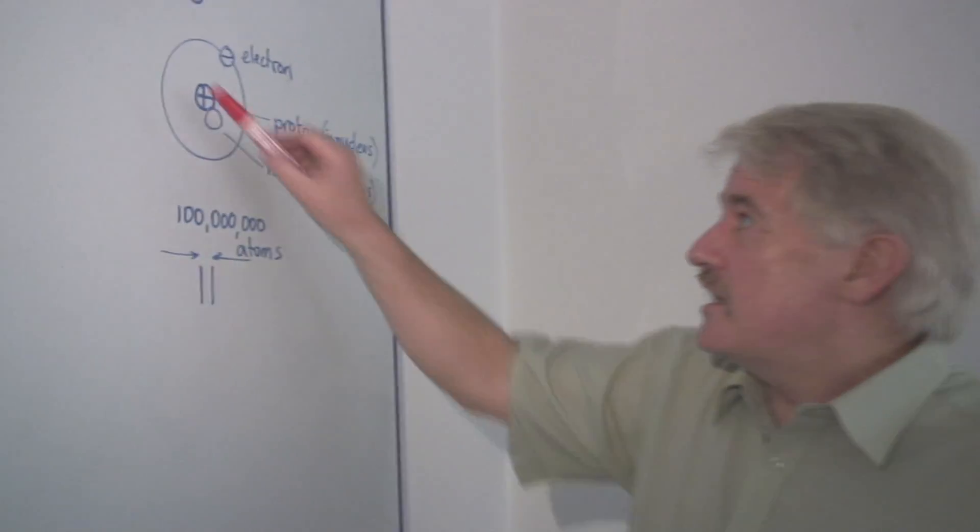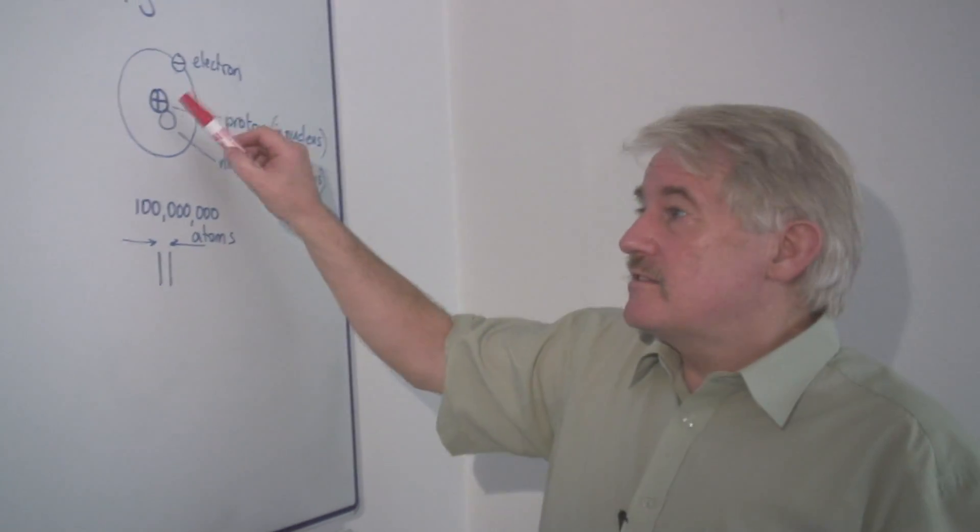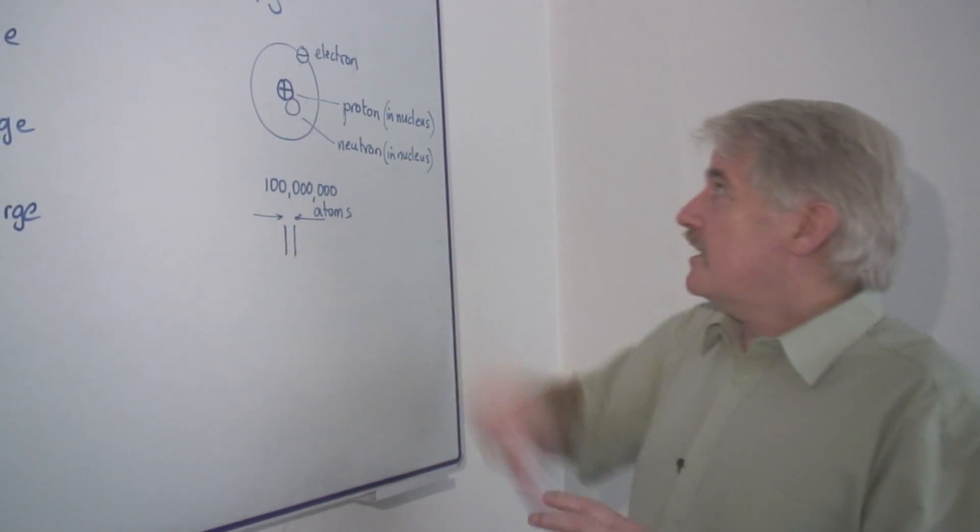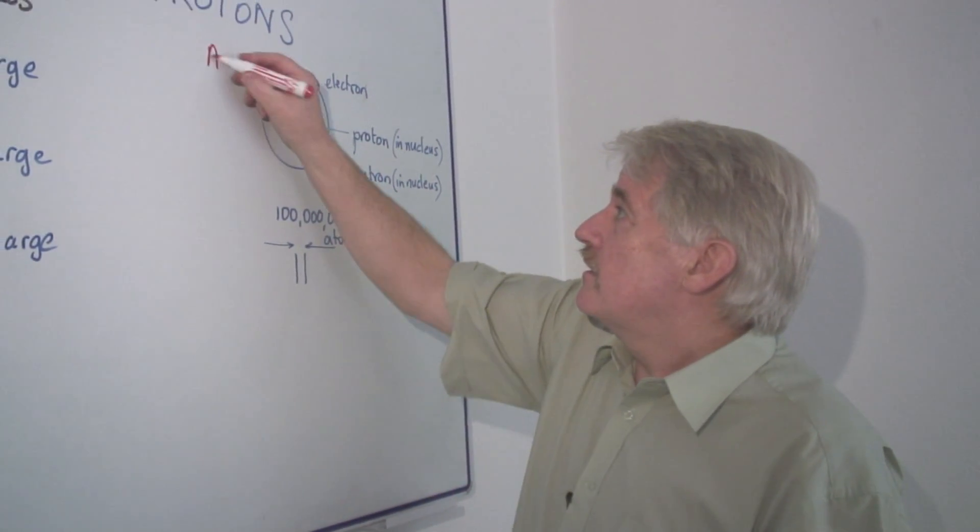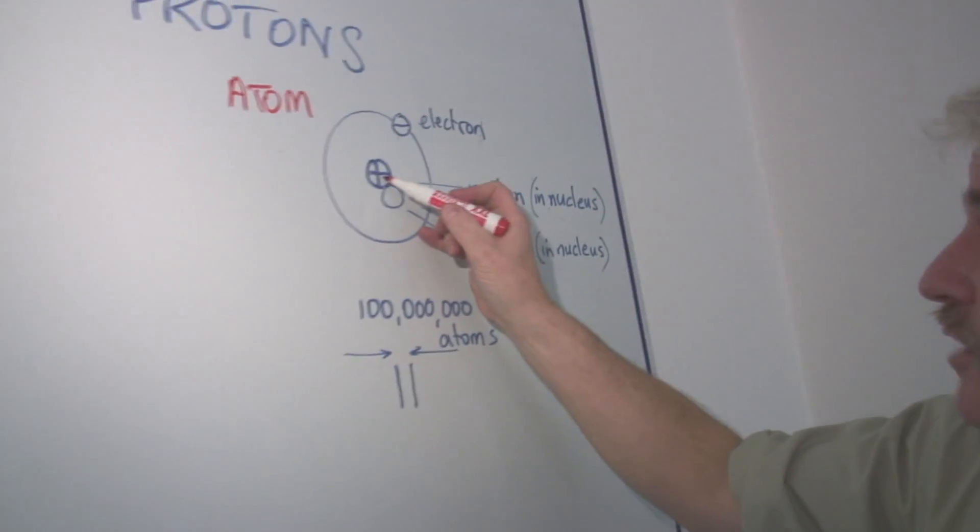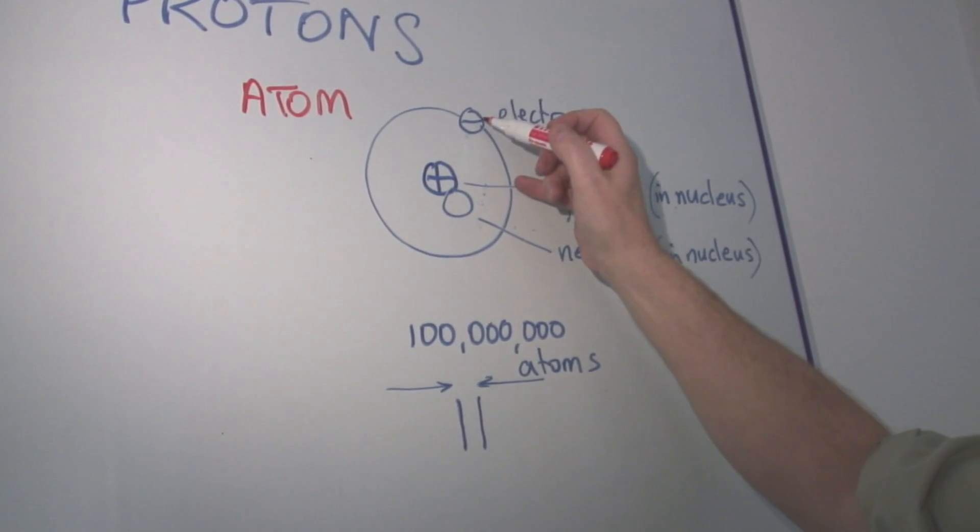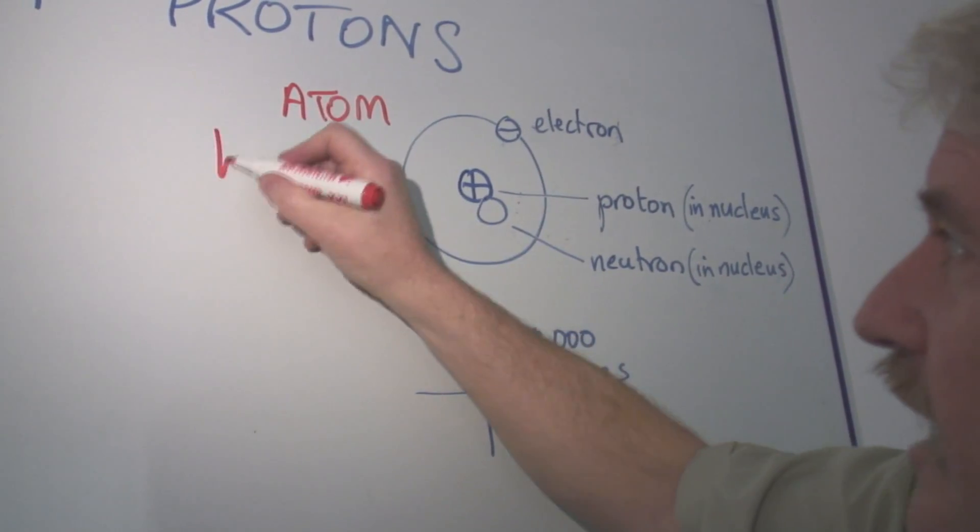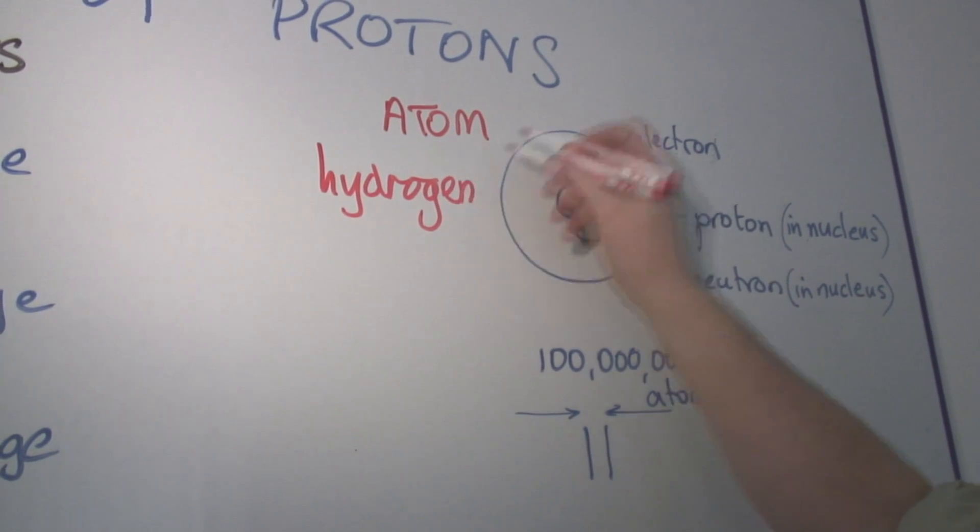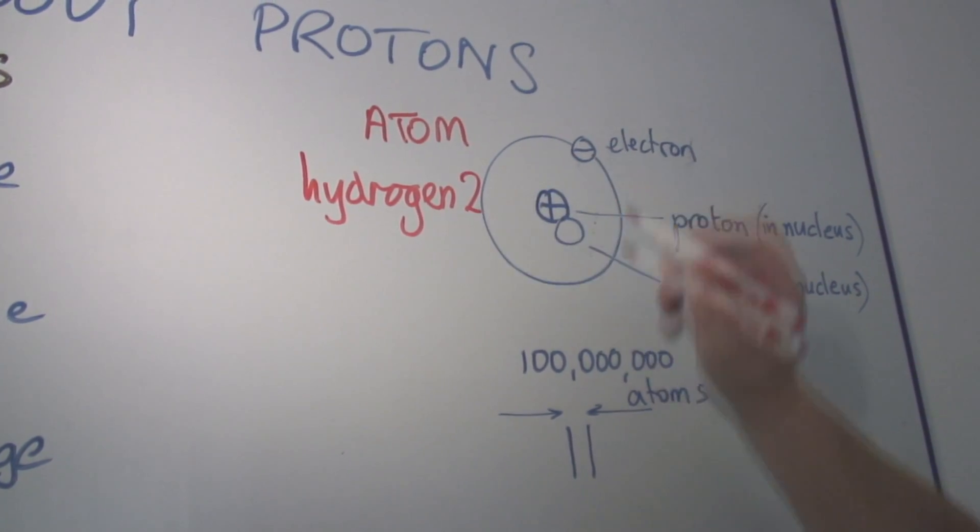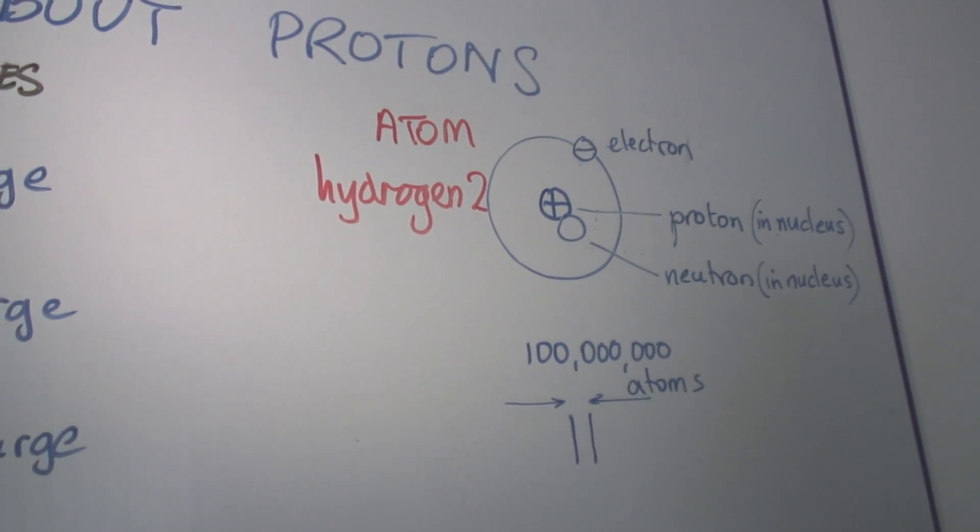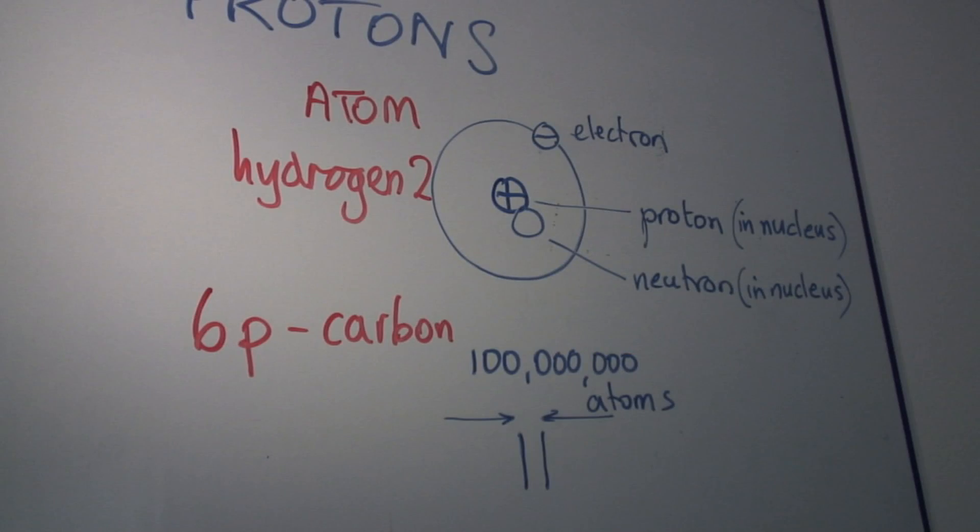But these particles determine what material this is. Actually, this atom here, as you can see, the one you can see contains a proton, a neutron, and one electron. This atom actually is hydrogen, although it's a special kind of hydrogen called hydrogen two, which is also called deuterium, and is heavy hydrogen. It exists naturally.